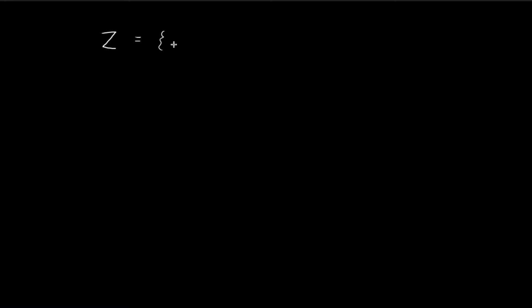Now let's take a look at an example. Suppose we have the set of integers Z — Z stands for the set of integers. So we have all the negative integers, and then we have 0, and then we have all the positive integers. So this is the set of all integers.